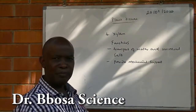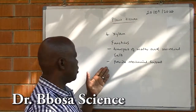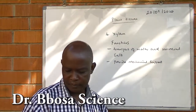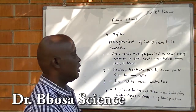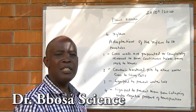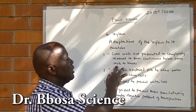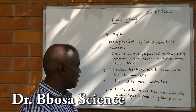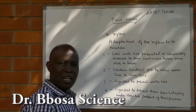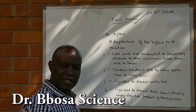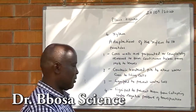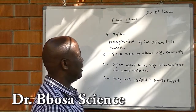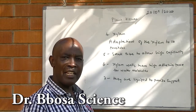Functions of the xylem: one, it transports water and mineral salts. Two, it provides mechanical support, especially to the stems and roots. Adaptations of the xylem to its function: one, cross walls are perforated or completely removed to form a continuous tube from roots to leaves. Two, contain bordered pits to allow water to pass to living cells. Three, lignified to prevent water loss. Four, lignified to prevent them from collapsing under the negative pressure of the transpiration pull. Five, they are small tubes to allow high capillarity. Six, xylem walls have high adhesive force for water molecules.